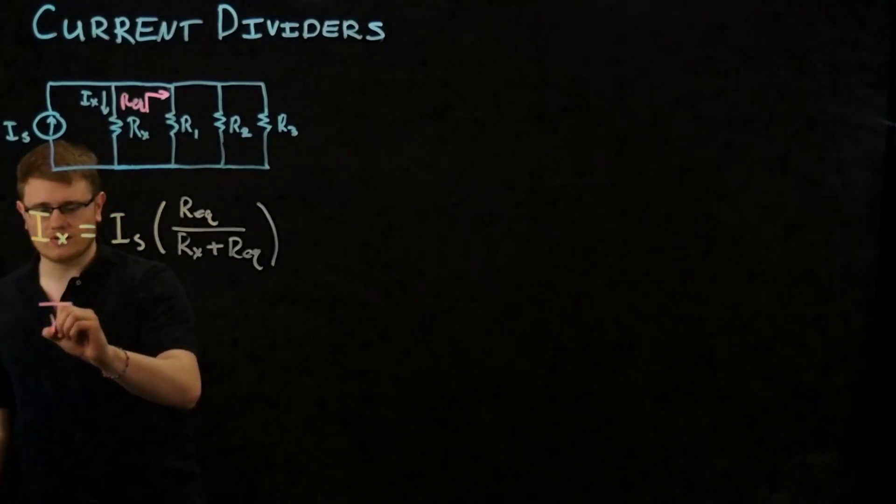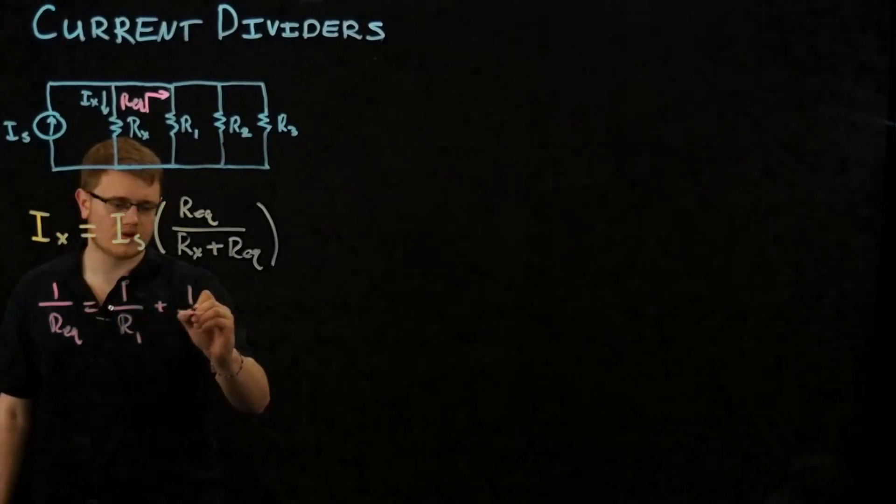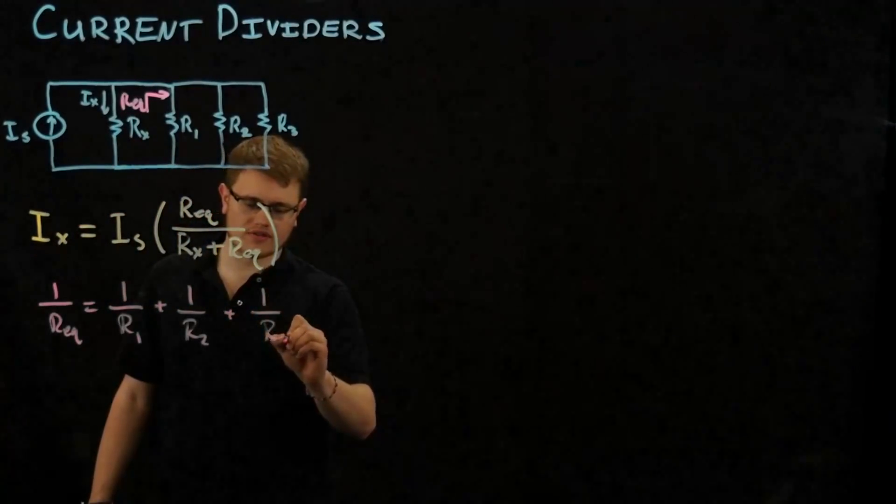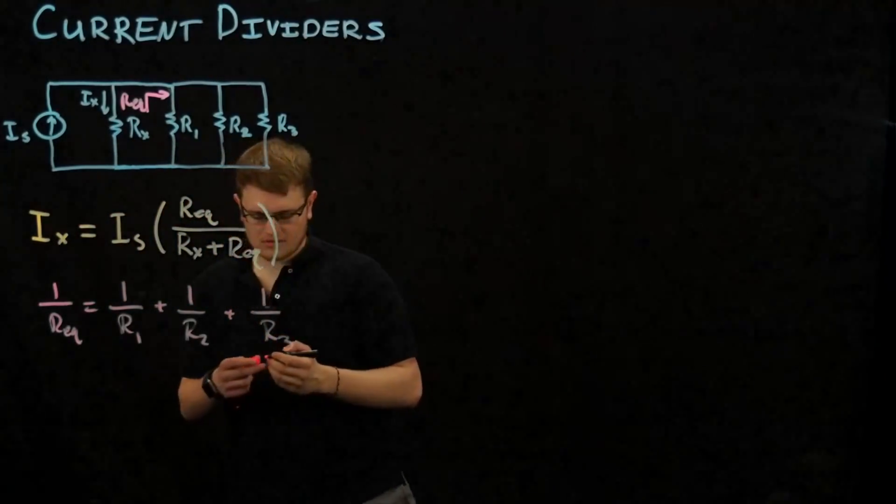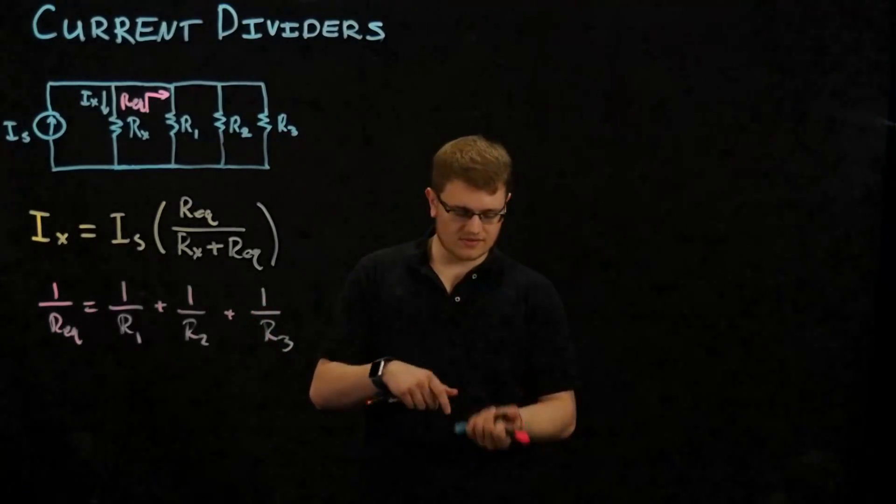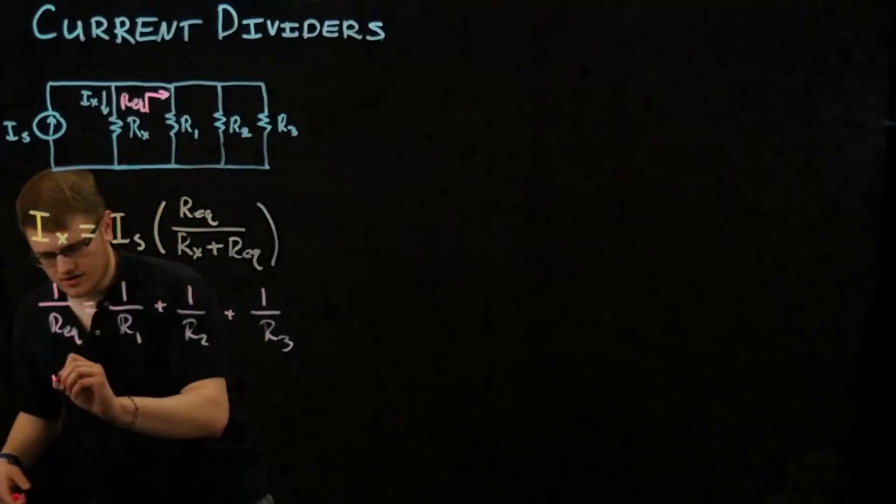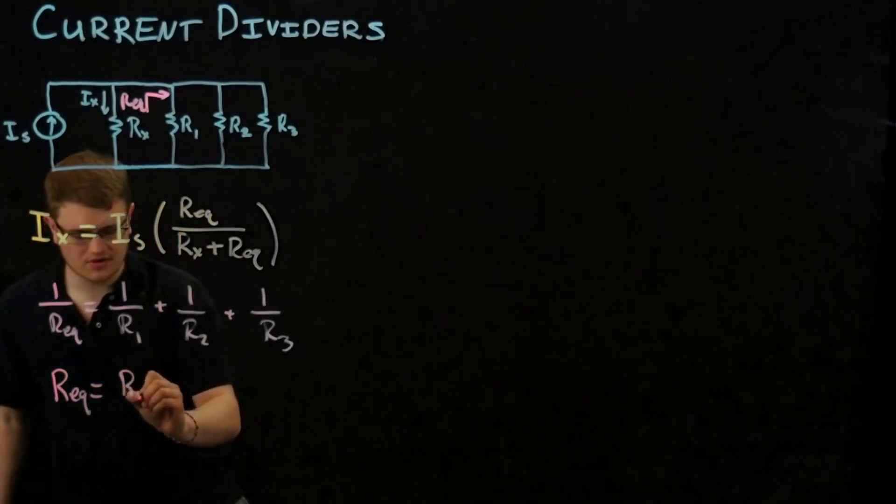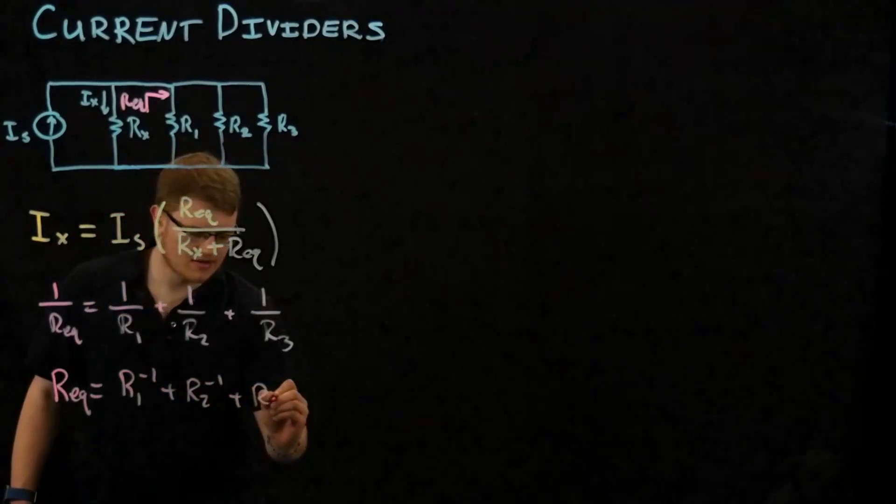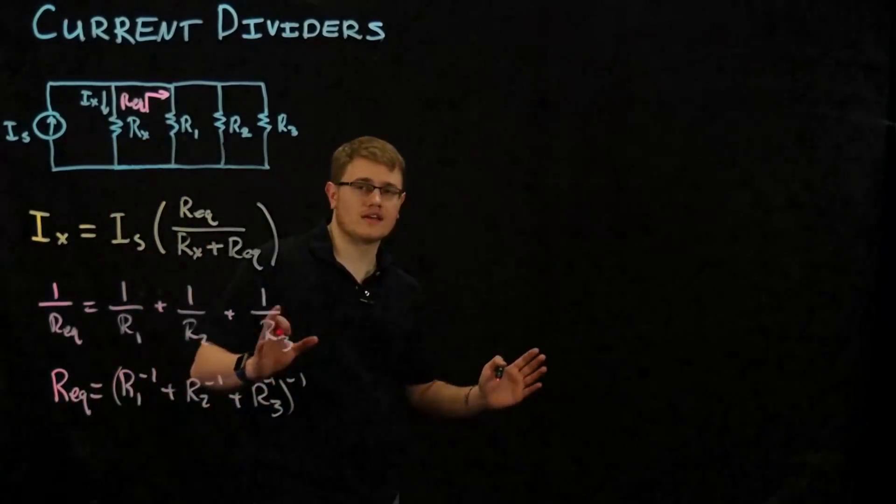Well, one over Req equals one over R1 plus one over R2 plus one over R3. And we all know how to do this if we've done parallel resistors before. Req is equal to the inverse of the sum: R1 inverse plus R2 inverse plus R3 inverse, all to the negative one. And then we have our equivalent resistance.